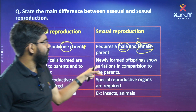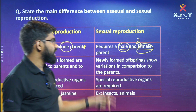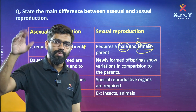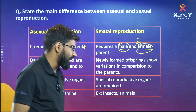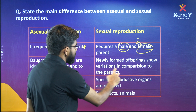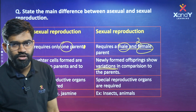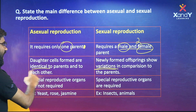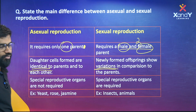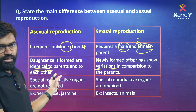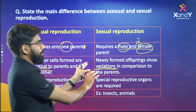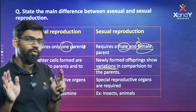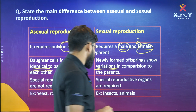Newly formed offspring show variations in comparison to the parents in sexual reproduction. This is a very important point — in asexual reproduction, offspring are identical to the parents.